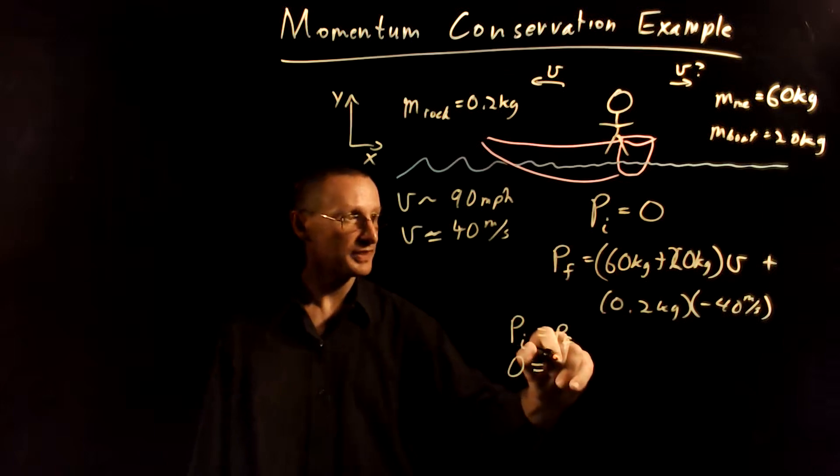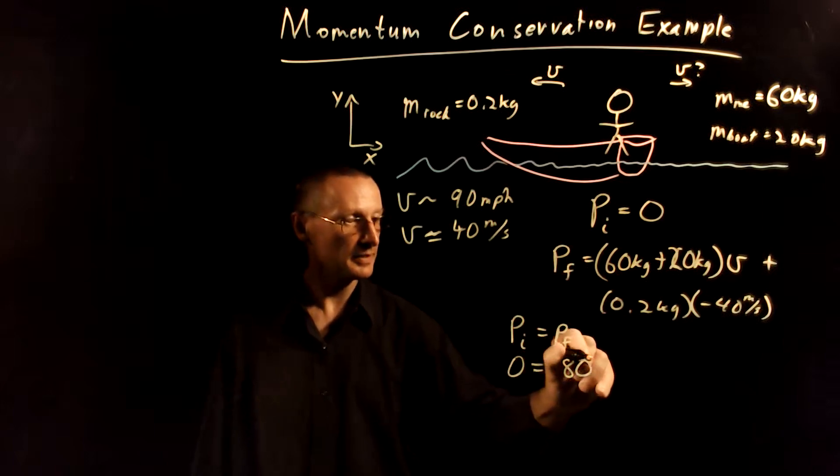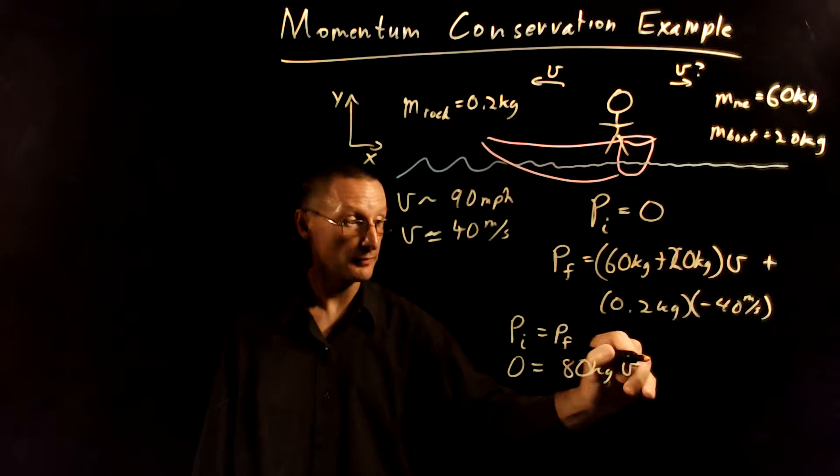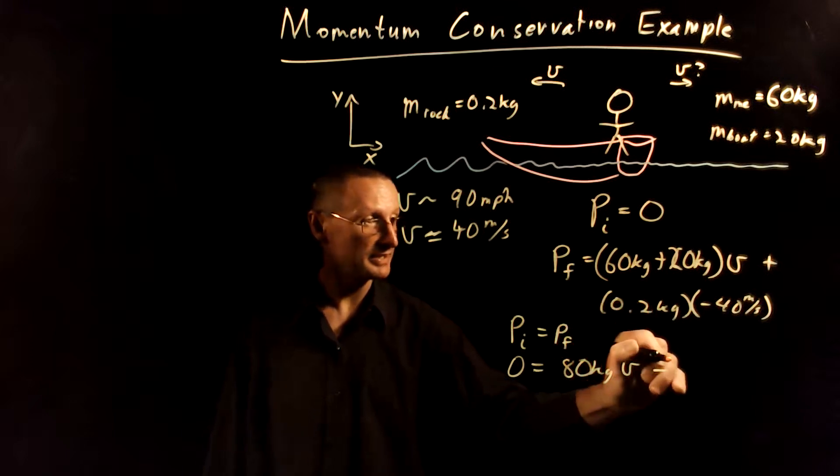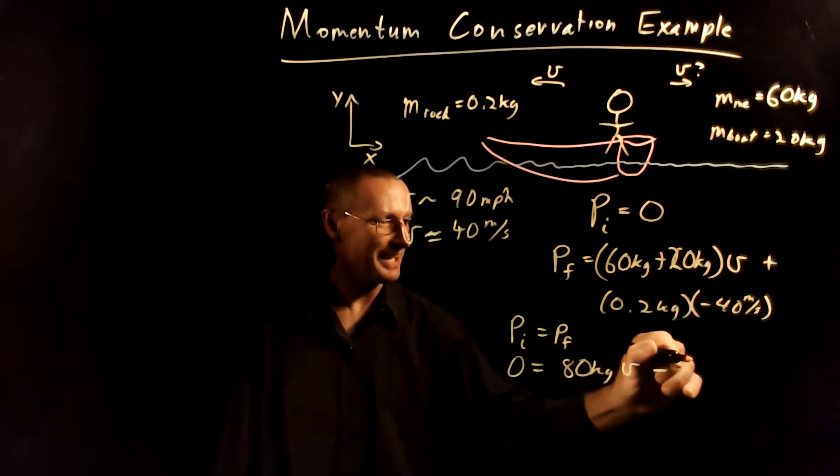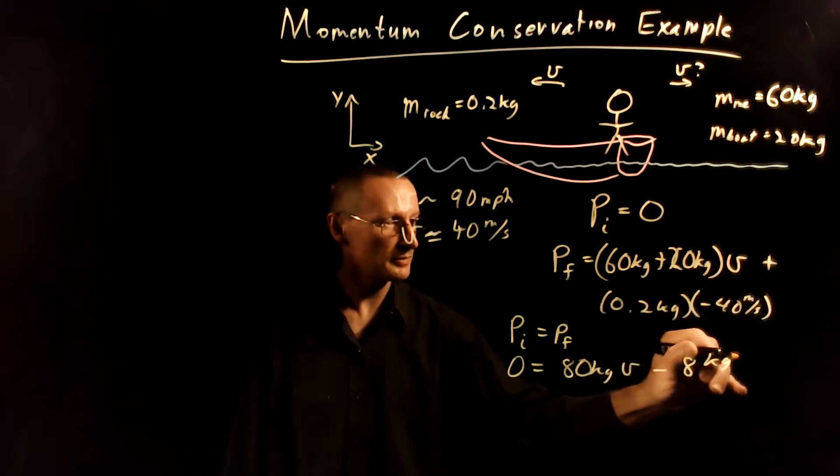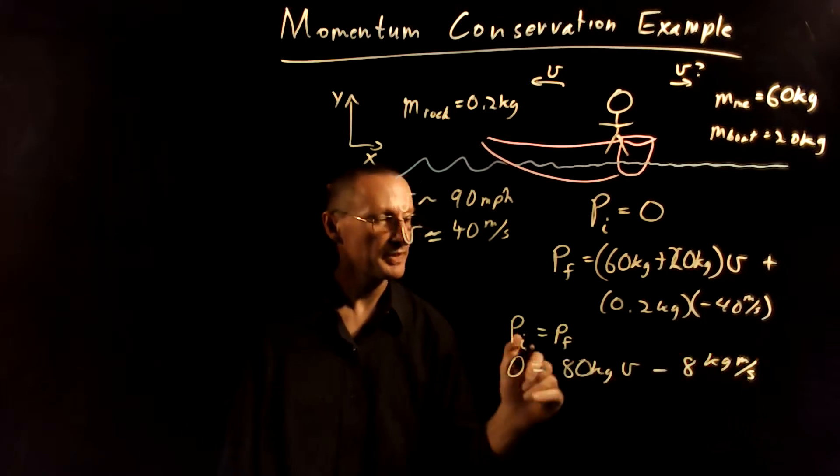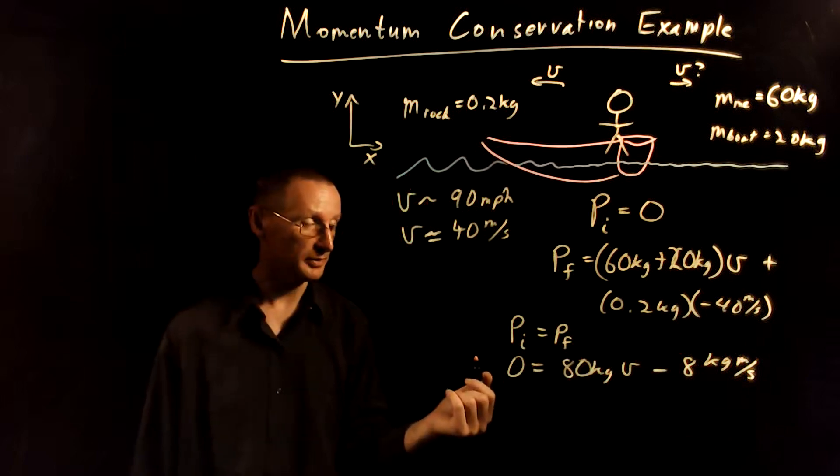So this gives us 80 kilograms times the unknown boat velocity minus 0.2 times negative 40 gives us 8, and the units here are kilogram meters per second, and that's got to be equal to zero.